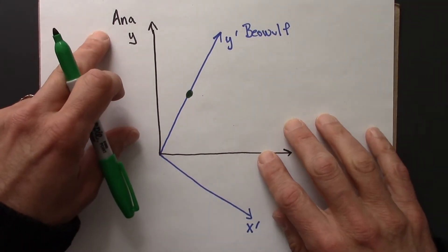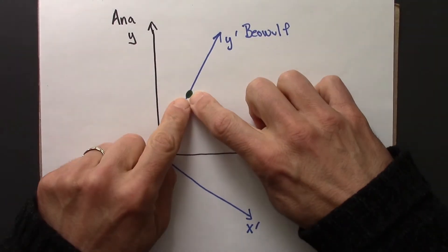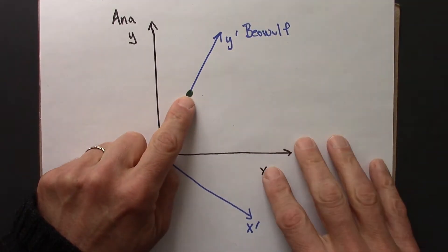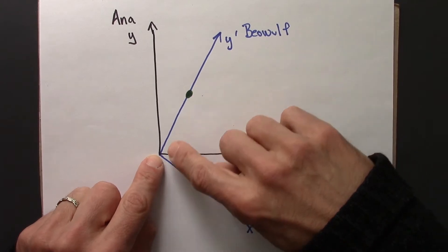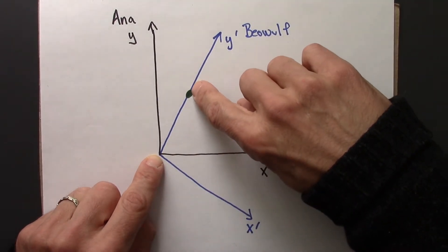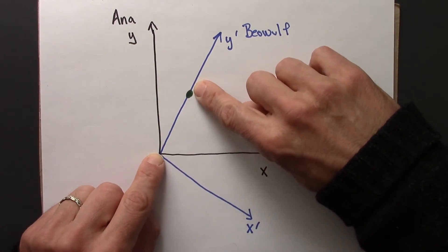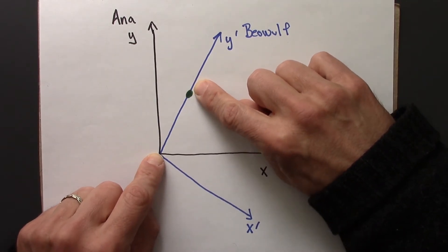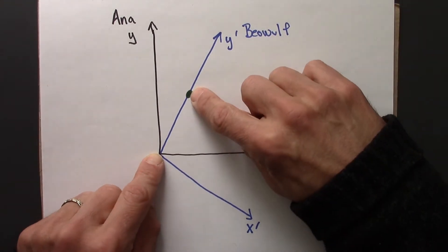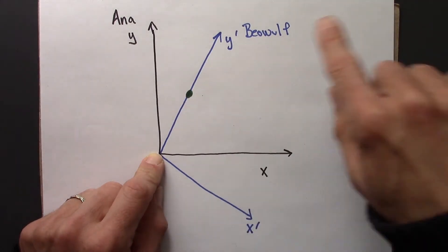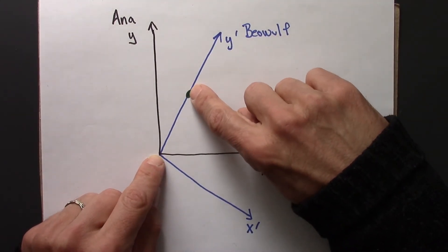So what does Anna make of this situation? So Anna says, Beowulf's out here somewhere in space, and I don't know exactly what this point is. But he just told me that the distance between the green dot and the origin, this point in question, is one meter. And distances are coordinate independent. We're not going to agree on the coordinates, but we're going to agree on the distance. So how might I think about this over here?